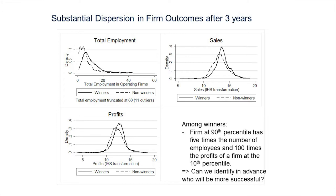Looking three years later, there's substantial dispersion in how these firms performed. Even after significant filtering at the application stage, a firm at the 90th percentile has five times the number of employees and a hundred times the profits of a firm at the 10th percentile. We'd like to know whether we can predict in advance where firms will end up in that distribution.